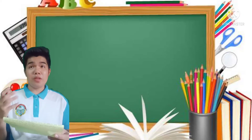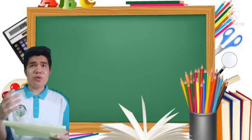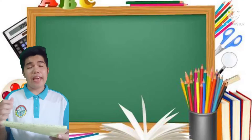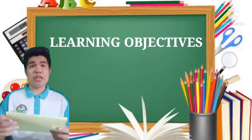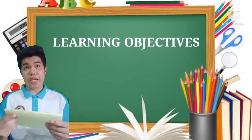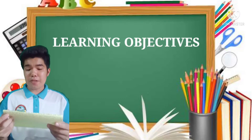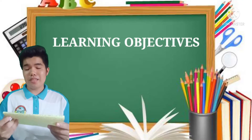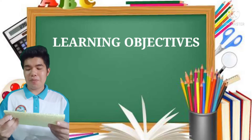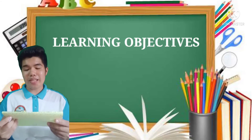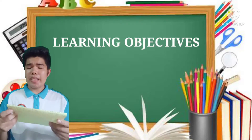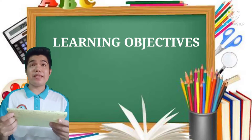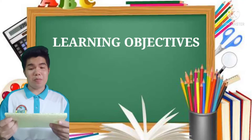So today, I am going to introduce to you a new lesson. And of course, I will read first its learning objectives. Objective: at the end of the lesson, the pupils should be able to: A. Describe the different sense organs; B. Appreciate the importance of the sense organs of the body; and C. Give the function of the different sense organs of the body.